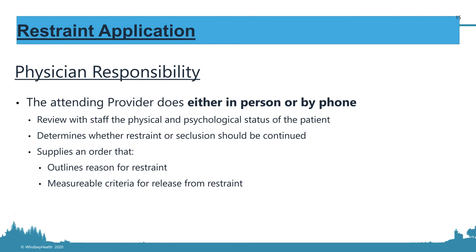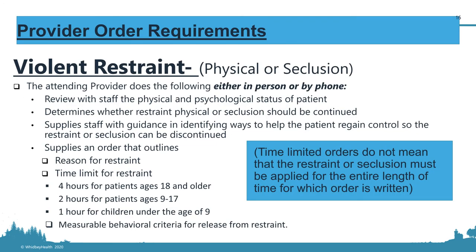The attending provider must review the physical and psychological status of the patient when restraints are started, to determine whether to start or continue restraints or seclusion. You then have to write an order. There will be three order types: violent, nonviolent, and chemical. Each has required fields you must fill out. For violent restraints — physical or seclusion — the attending provider must document the reasoning.